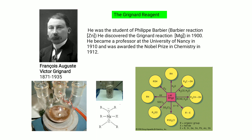The Grignard reagent was discovered by François Auguste Victor Grignard, a student of Barbier. He discovered the Grignard reagent — magnesium bonded to a halide atom (Cl, F, Br) — in 1900. He became a professor at the University of Nancy in 1910 and was awarded the Nobel Prize in Chemistry in 1912. The general formula is RMgX, and Grignard reagents have many types of chemical reactions.